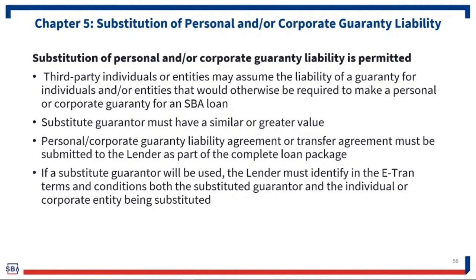You've always had and exercised the opportunity to take the guarantee of someone required, but also someone who has assets when that required person doesn't. So you're familiar with the concept of having your borrower guarantee and then adding an additional guarantor. In this case, what we're allowing you to do is substitute that guarantee, but there should be some kind of transfer or liability agreement submitted to you by the applicant as part of the loan package.